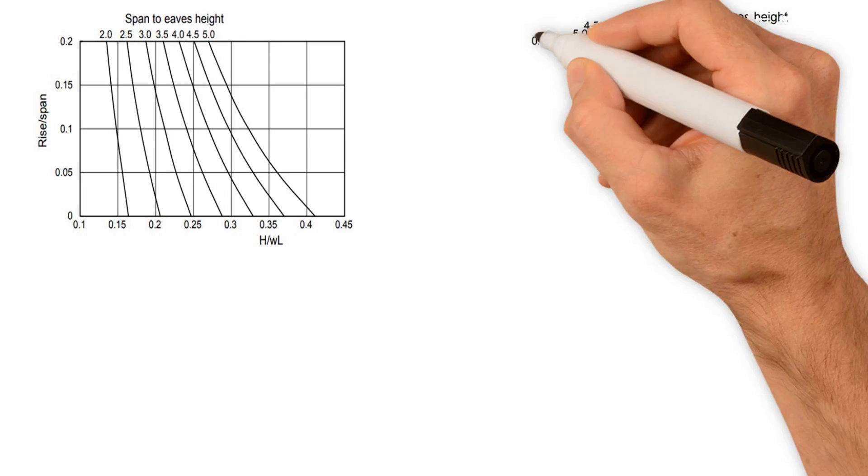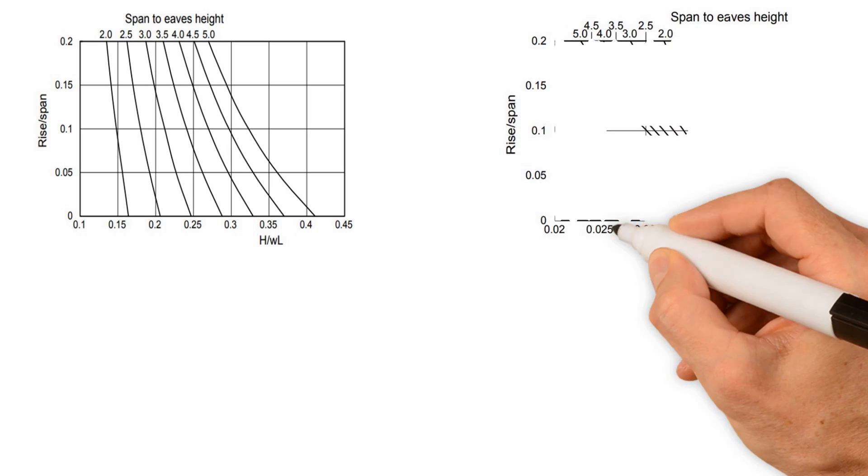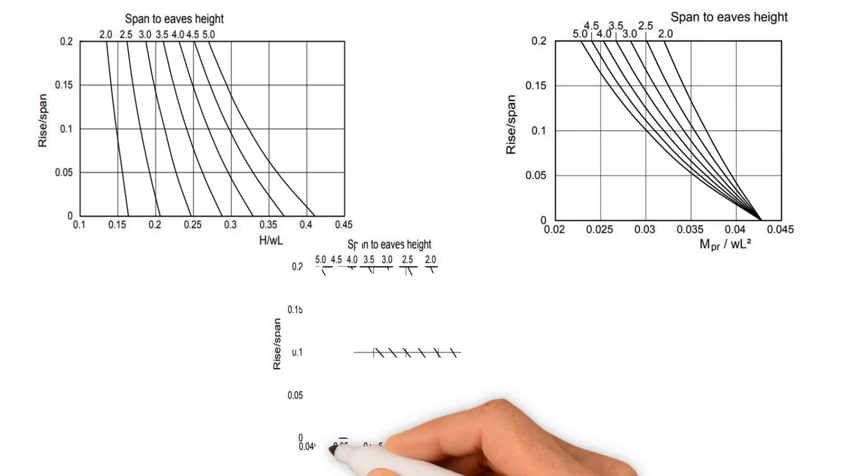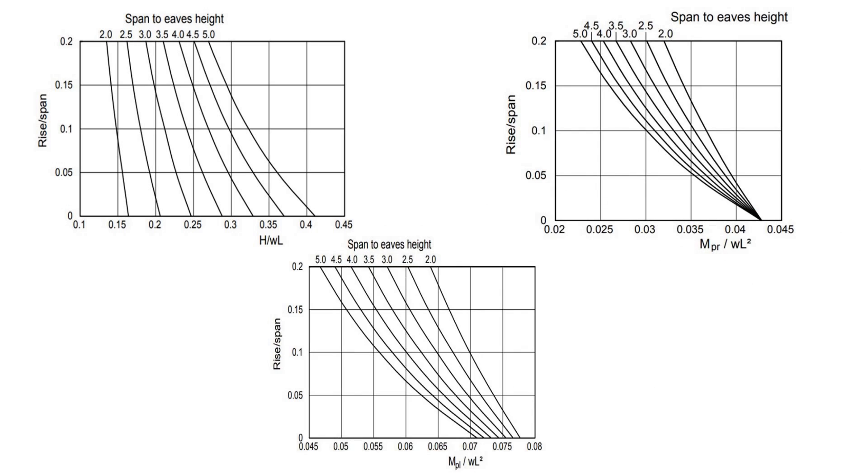Weller's chart graphical method is usually used to determine the plastic moments that can enable initial sizing of members. The simplicity of the charts depends on a series of three charts developed by Weller. The application of the method relies on the following assumptions.